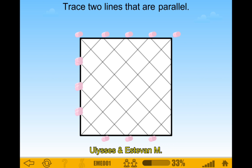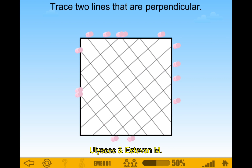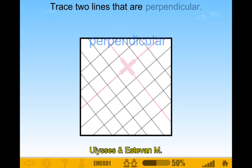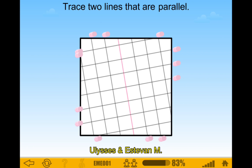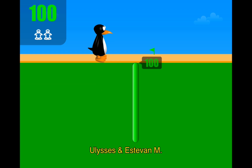Parallel? I'm gonna go here and here. This seems cool. I like this one, though, cause there's like a bunch of squares. Perpendicular — okay, this is simple. That's perpendicular. Perpendicular. Perpendicular. Okay. Perpendicular. Parallel. Wow, this is all simple. Really simple. Parallel. Oh, that's it? That's cool. I like that one.